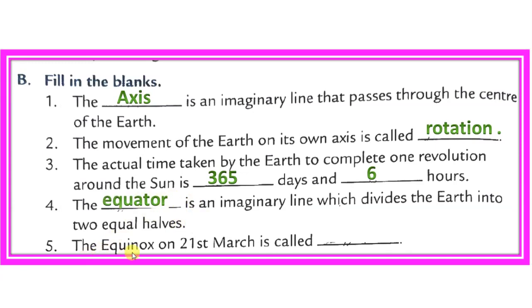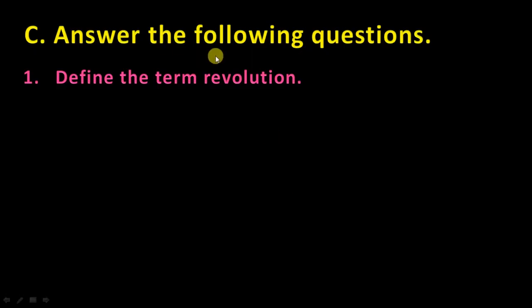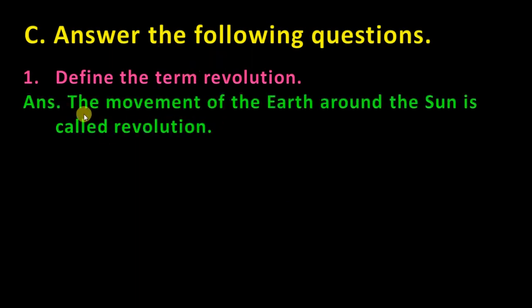The equinox on 21st March is called the spring equinox. Next question: define the term revolution. The movement of the earth around the sun is called revolution.